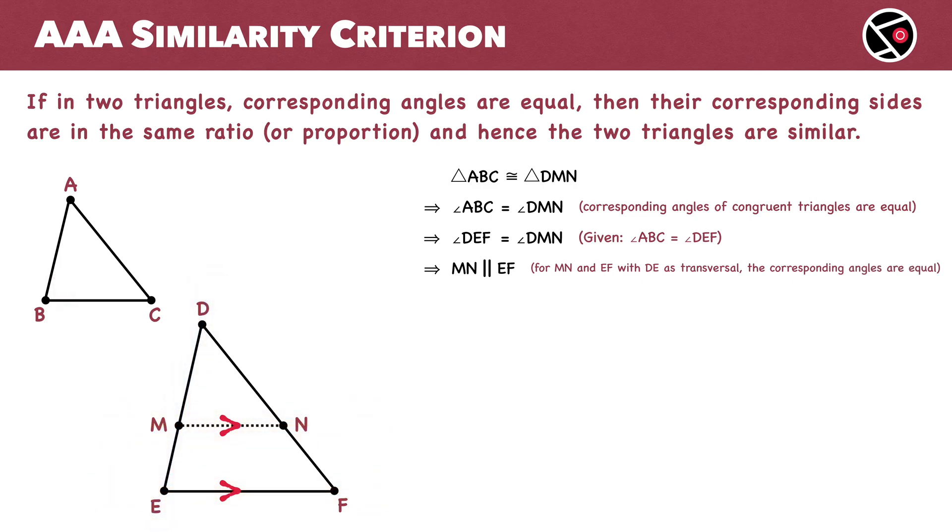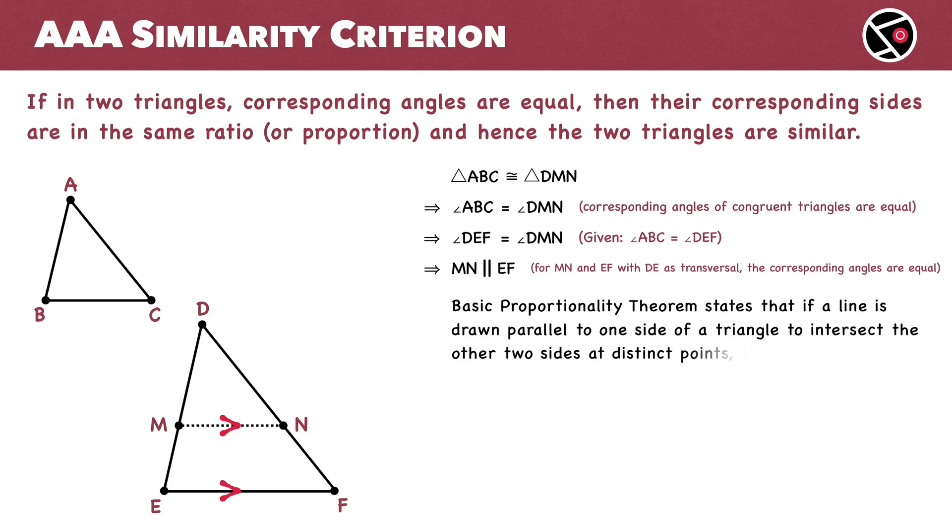Next, we will apply the Basic Proportionality Theorem. This theorem states that if a line is drawn parallel to one side of a triangle to intersect the other two sides at distinct points, the other two sides are divided in the same ratio. In triangle DEF, MN is parallel to EF, so MN will divide the other two sides, DE and DF, in the same ratio. Therefore, for triangle DEF, the ratio of DM to ME equals the ratio of DN to NF.